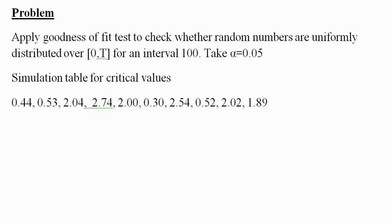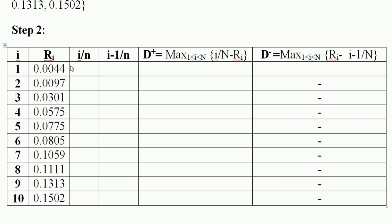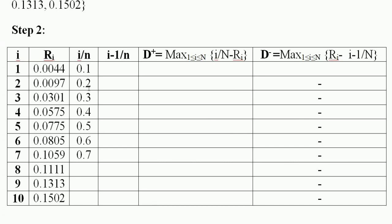The value of i goes from 1 to n, where n = 10. So i/n values are: 1/10 = 0.1, 2/10 = 0.2, 3/10 = 0.3, 4/10 = 0.4, 5/10 = 0.5, 6/10 = 0.6, 7/10 = 0.7, 8/10 = 0.8.